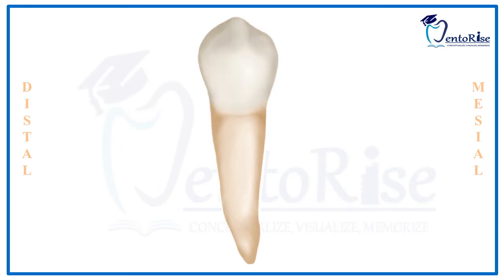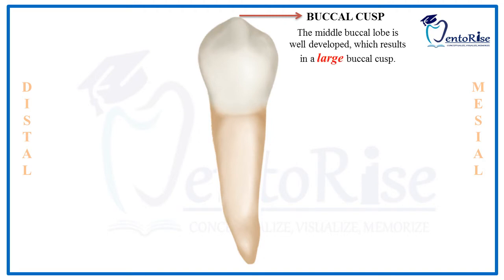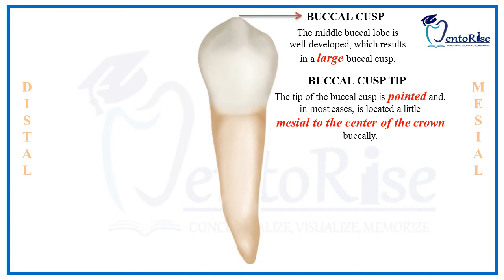The cusp seen from the buccal aspect is called the buccal cusp. It is formed because the middle buccal lobe of the mandibular 1st premolar is very well developed, resulting in a large buccal cusp. The tip of this cusp is pointed and is located a little mesial to the center of the crown.